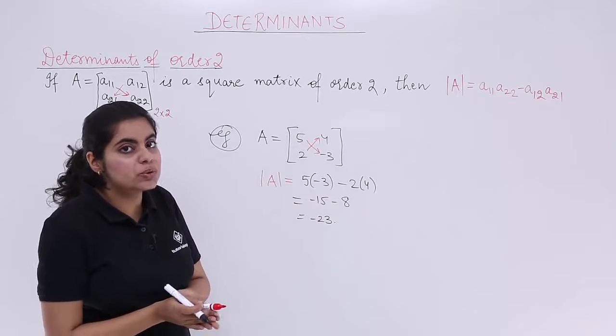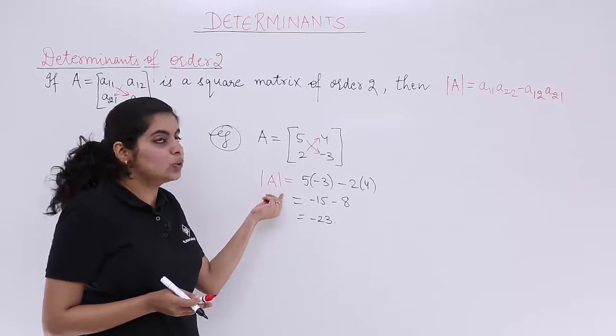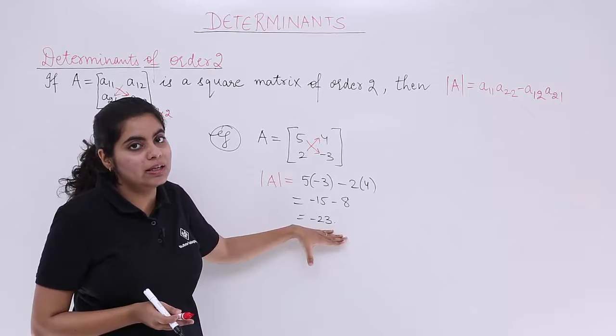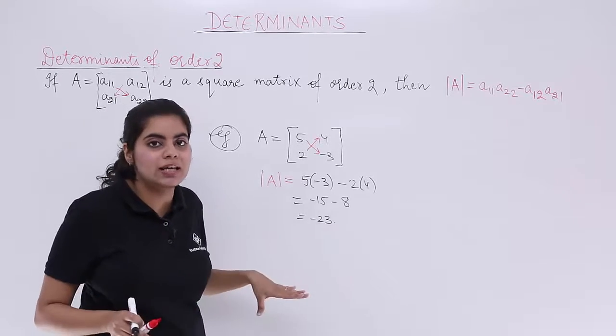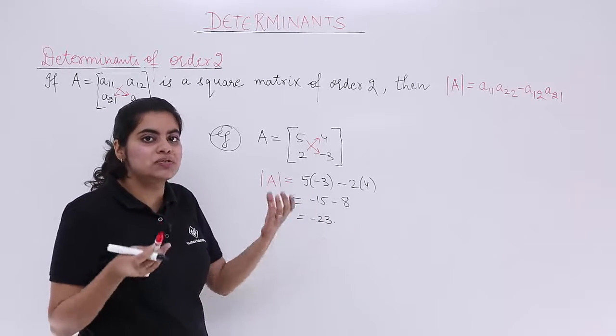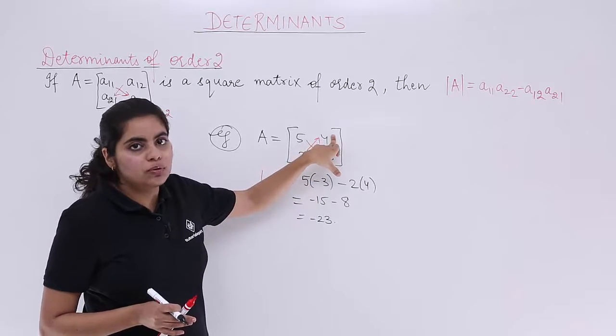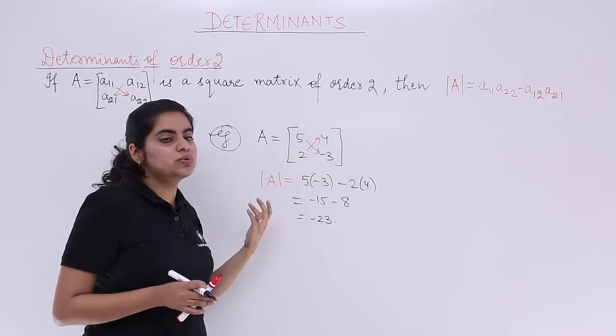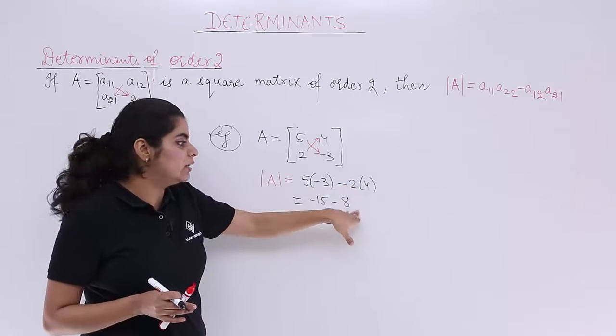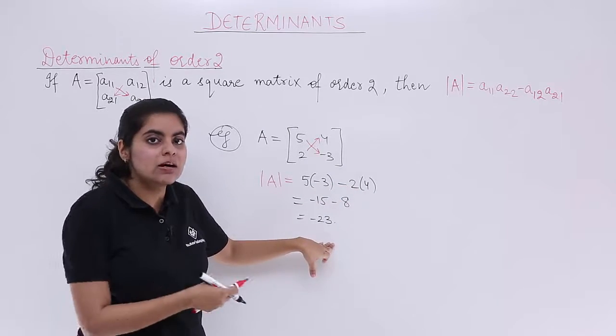Now again do not get confused with modulus sign. Don't think it is modulus. So answer cannot be negative, it should be 23. It's not that case. The answer is negative 23 only. And again if you do not do it 2 into 4, rather you come from upwards to downwards, you do it 4 into 2, again it will be 8 only. Again the answer will be minus 23.